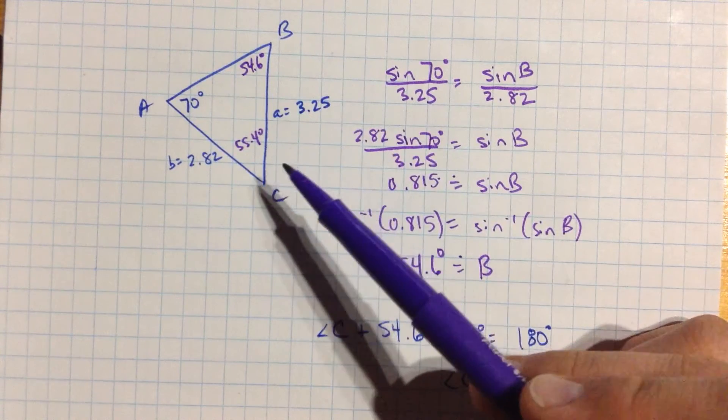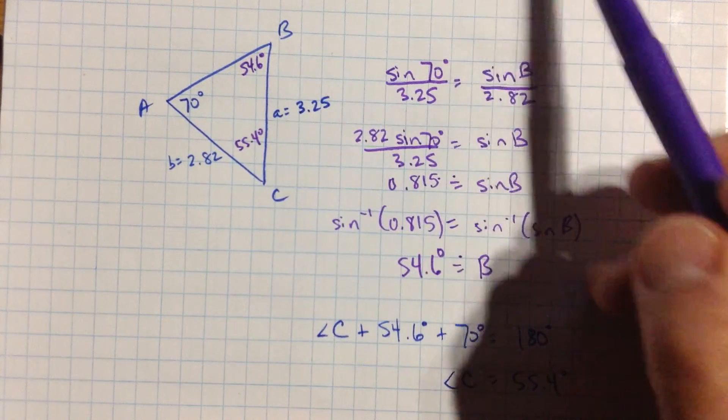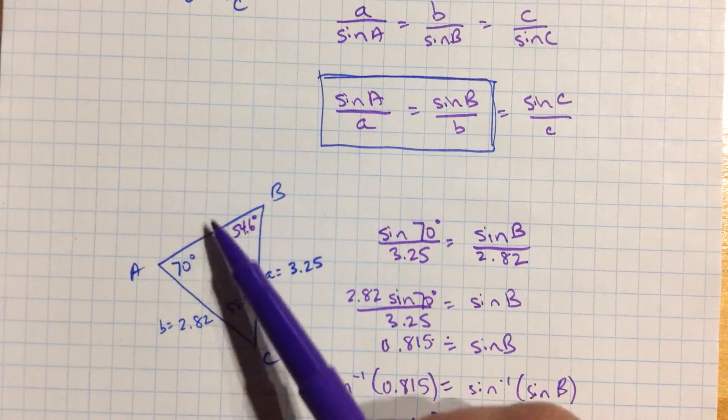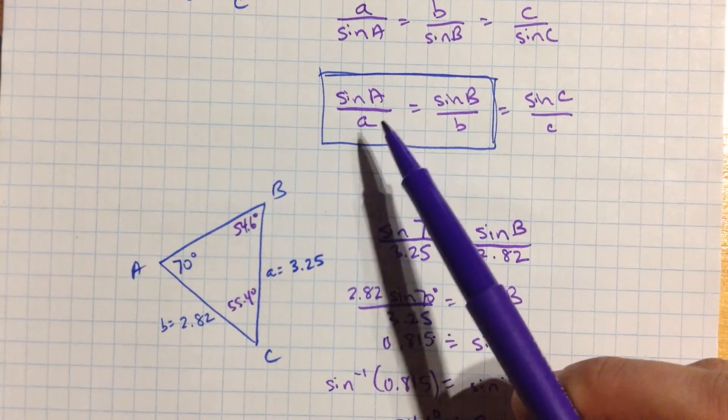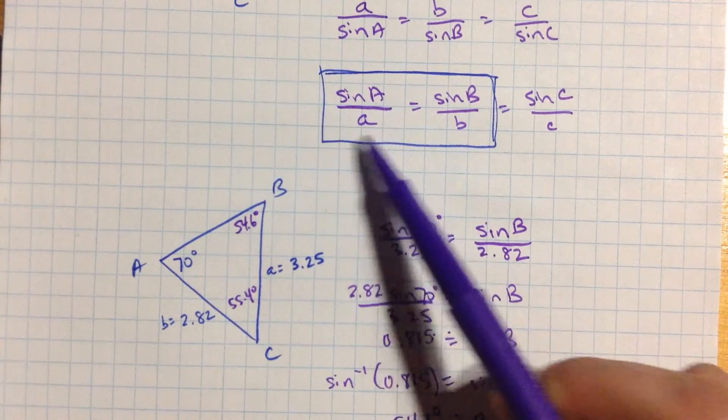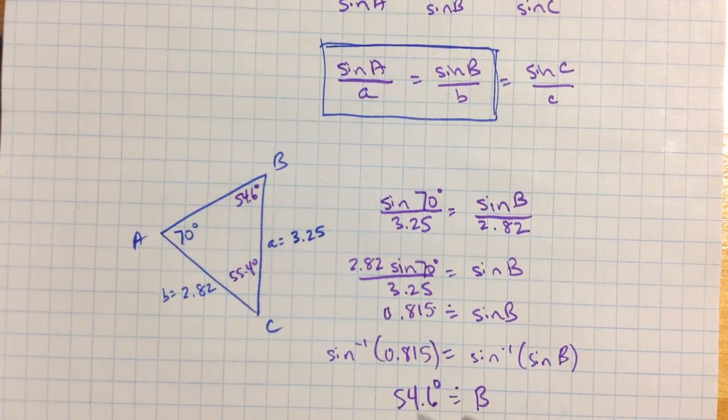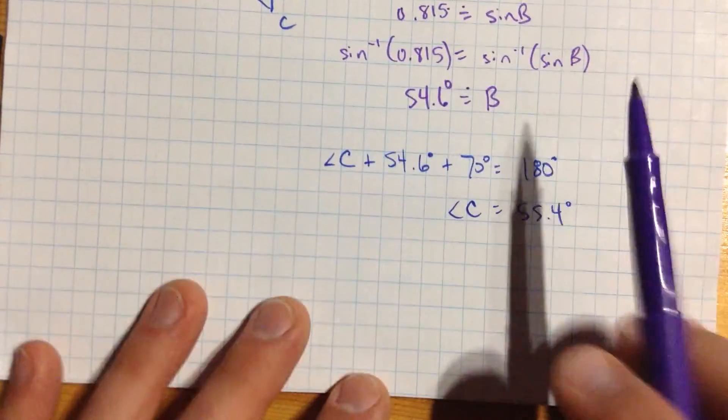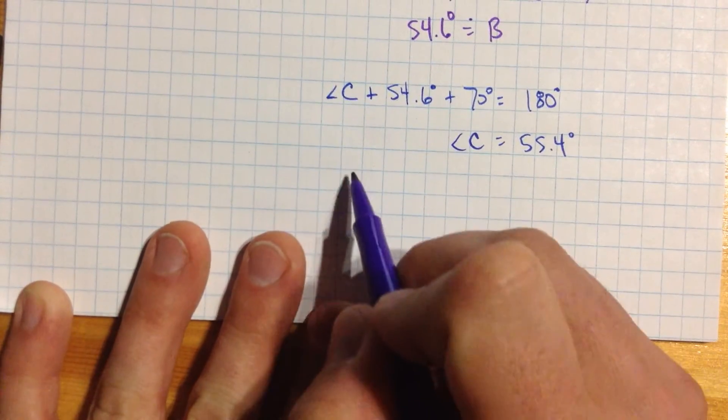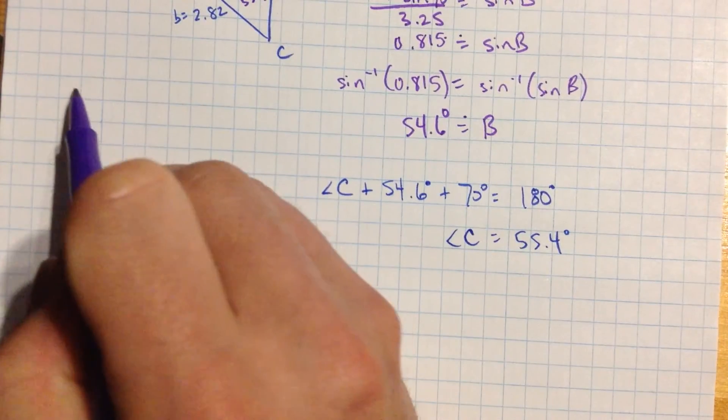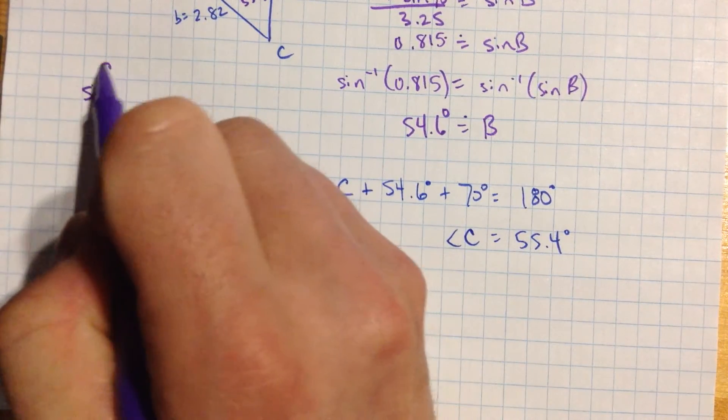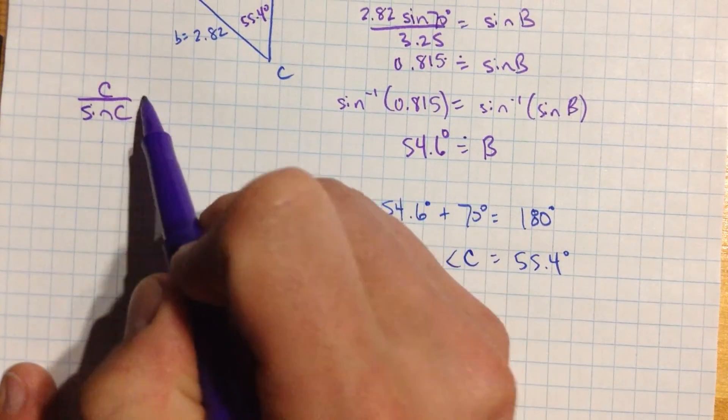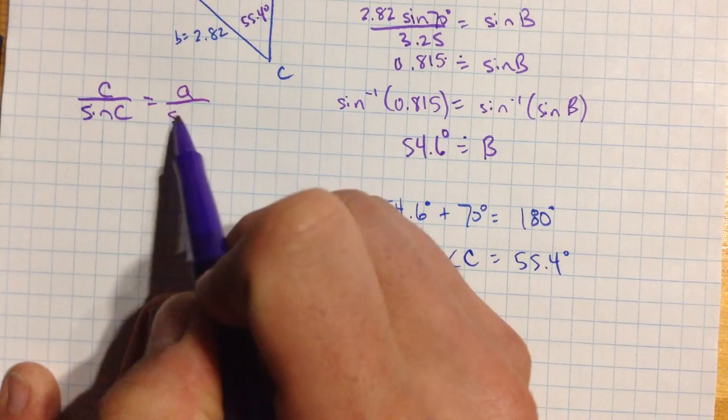Well, I can find that side length by using my ratio up here, including sine c over c. I only don't know little c now, but I know big C. And let's use the original a values, because they're more accurate than the ones that I rounded off down here. So we're going to use the a and the c parts of this. I'm going to use c over sine c, because I want to find the little c value, is a over sine of a.